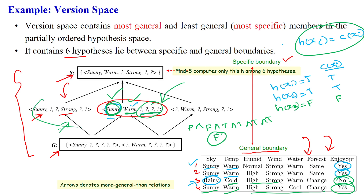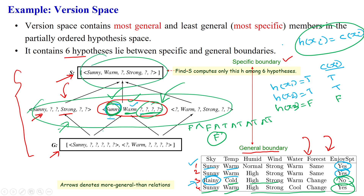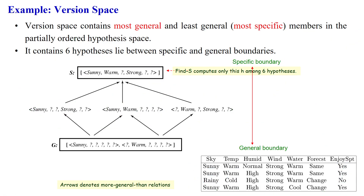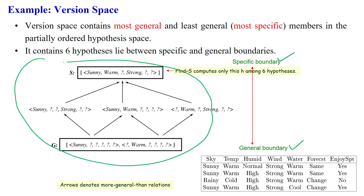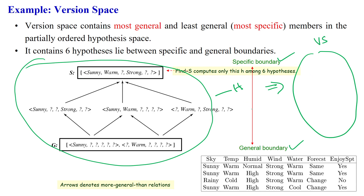All six hypotheses satisfy the given dataset D, so we can say all six are consistent hypotheses. They lie between the specific boundary and the general boundary in the hypothesis space. All consistent hypotheses are taken from hypothesis space H and considered as the version space. So all six hypotheses will be available in the version space with respect to given hypothesis space H and dataset D.